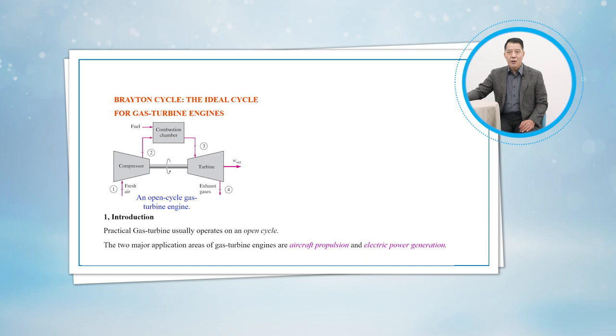Gas turbines are also used as stationary power plants to generate electricity as stand-alone units or in conjunction with steam power plants on the high-temperature side. In these plants, the exhaust gases of the gas turbine serve as a heat source for the steam.